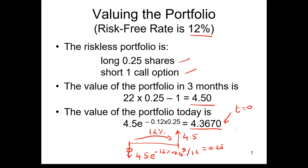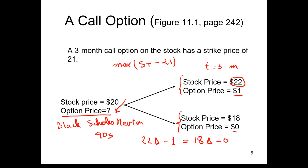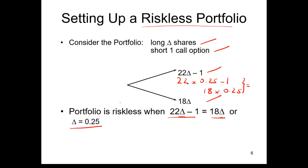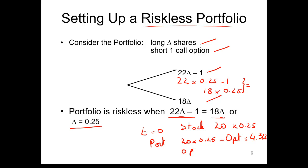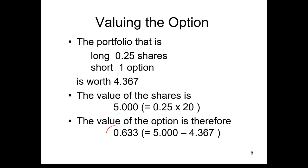We still don't know the option price. Since at t=0 the stock price is 20 and we bought 0.25 shares, the portfolio at time 0 is 20 × 0.25 minus the option price, and this equals 4.367. Solving for the option price gives 0.633. This is beautiful: we found a way to compute the option price without needing real-world probabilities — just a riskless portfolio. We replicated the option with just the stock and the bond.